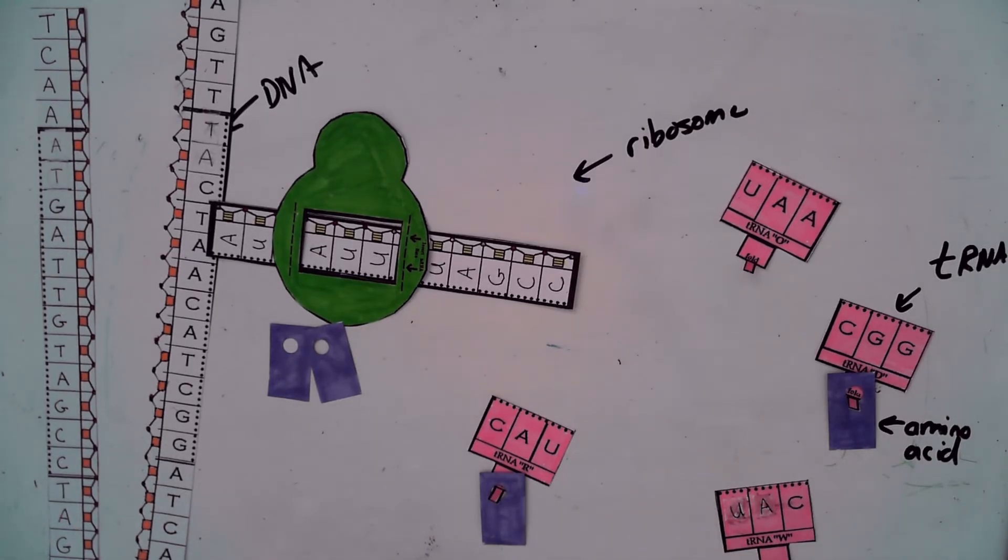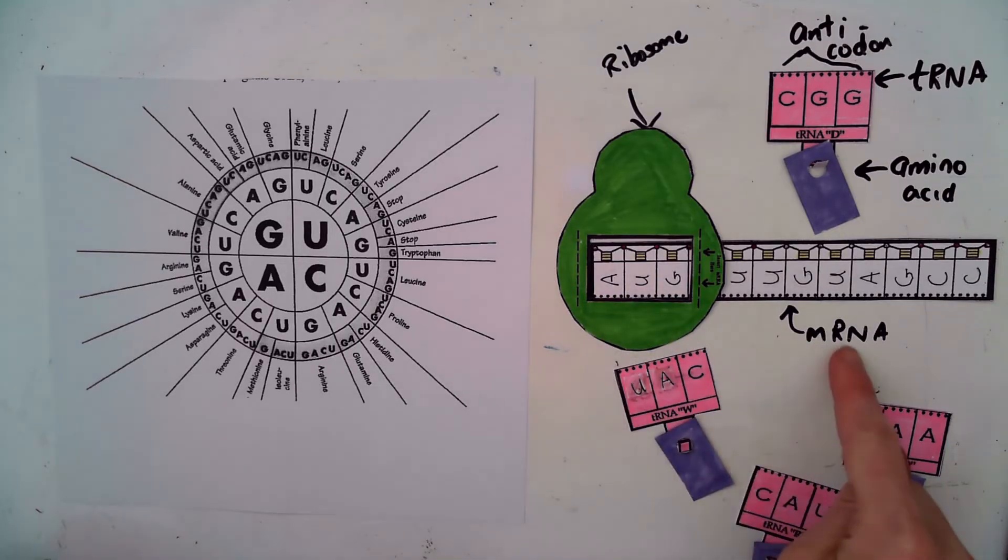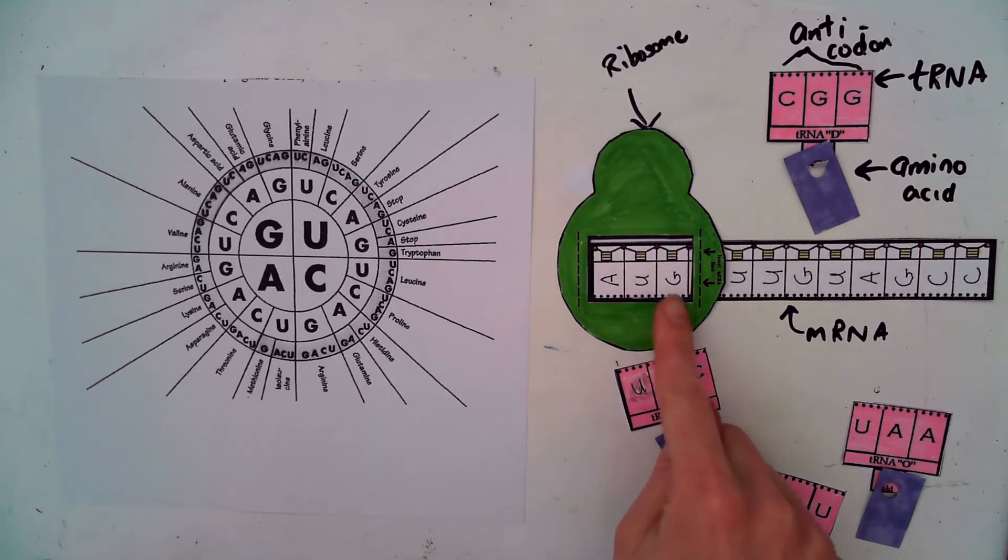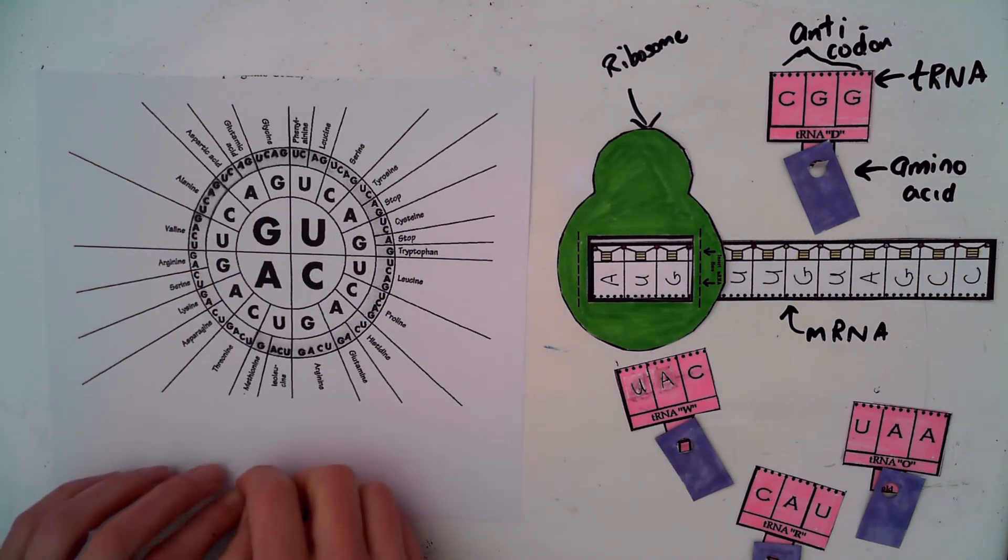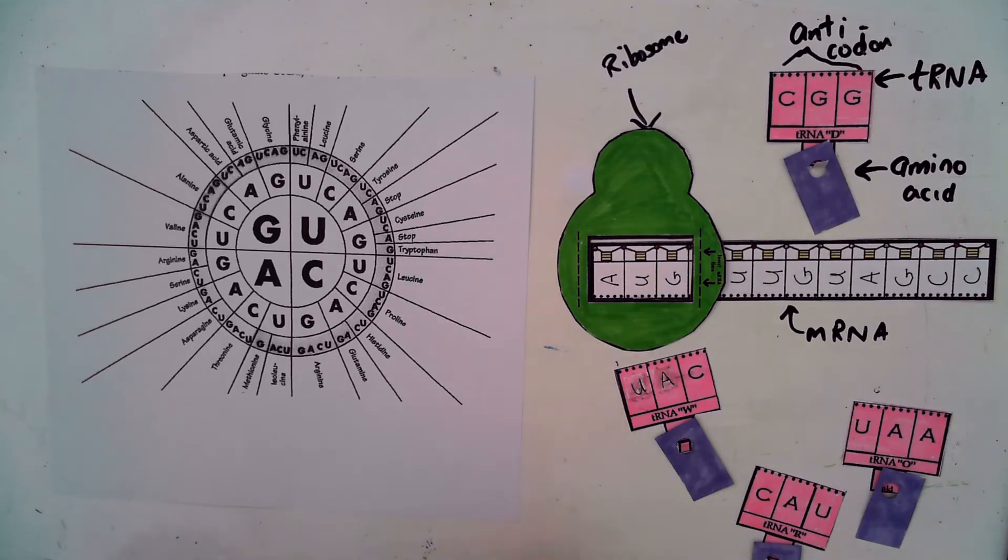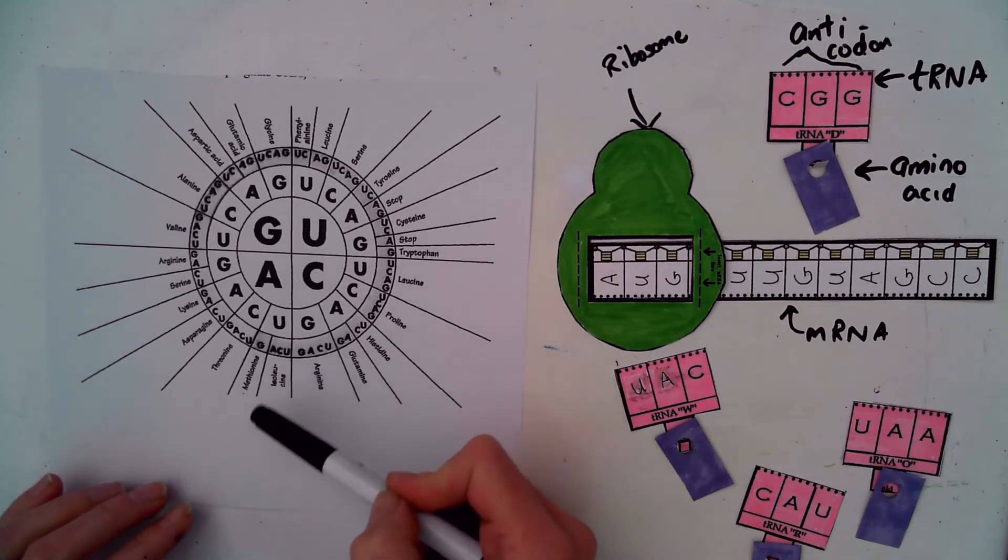So to actually read this secret code that's hidden in the DNA scientists have figured out that each codon on the mRNA molecule is going to code for an individual amino acid. So for example this first codon is AUG. We can use this tool that was created to help us figure out what the name of that amino acid is. So you always start at the center of the codon wheel and you work your way out.